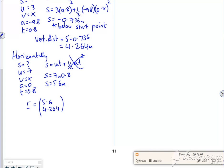Or another way to do it is to put it in, so that's in vector notation, or I could say it's 5.6 i and 4.264 j.